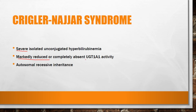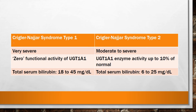Crigler-Najjar syndrome is more severe because there is markedly reduced or completely absent UGT1A1 activity. It is autosomal recessive, compared to Gilbert syndrome which can be autosomal recessive or autosomal dominant. There are two types: Type 1, where UGT1A1 function is almost zero — serum bilirubin ranges from 18 to 45 mg/dL; and Type 2, where up to 10 percent of UGT1A1 enzymes are functioning, making it moderate to severe, with serum bilirubin between 6 to 25 mg/dL.